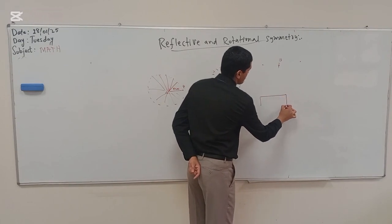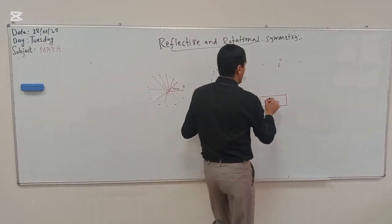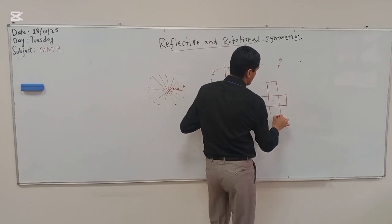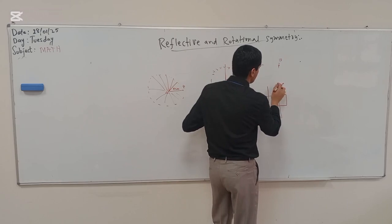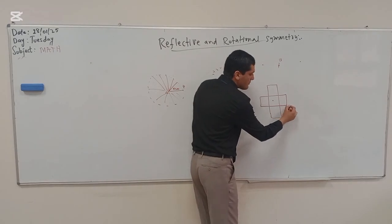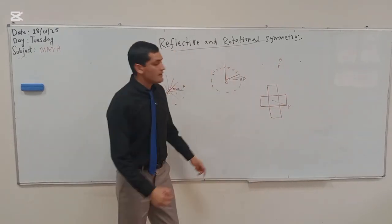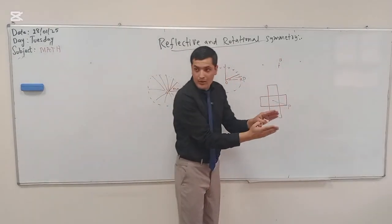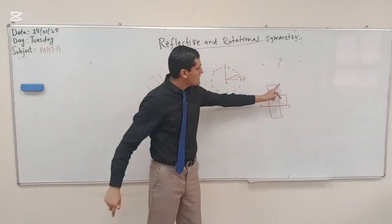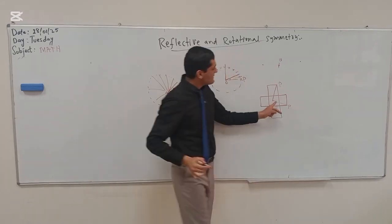Now consider a rectangle. Suppose this is the center of rotation, the point about which we want to rotate this object. This point P was here originally. When I rotate the object and bring it to a new position, joining the original position of P to O and then to the new position of P, we can see the angle made. When that angle is 90 degrees, the object has been rotated 90 degrees.